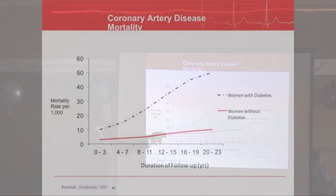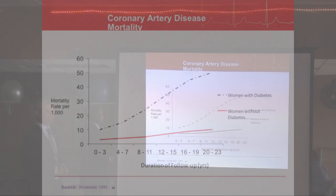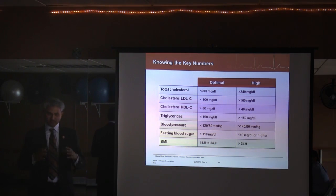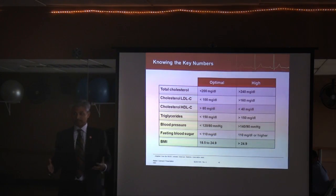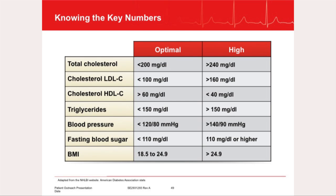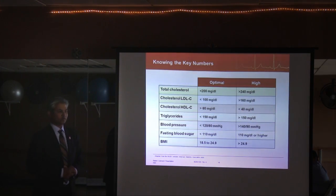Women with diabetes have a dramatically elevated risk of heart disease. Here are the target numbers: total cholesterol less than 200 is great, over 240 is high. LDL less than 100 is safe, over 160 is high. HDL over 60 is safe, under 40 is a problem. Triglycerides should be less than 150. Blood pressure less than 120 over 80. Blood sugar less than 110. BMI less than 25 — anything over 25 means overweight or obese.